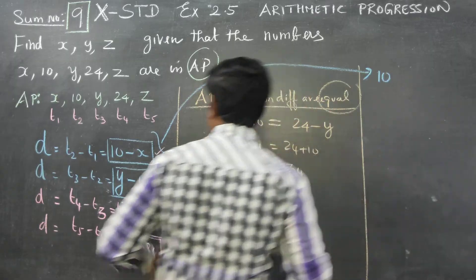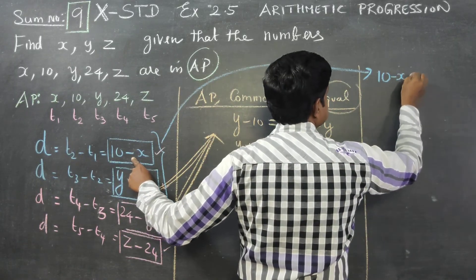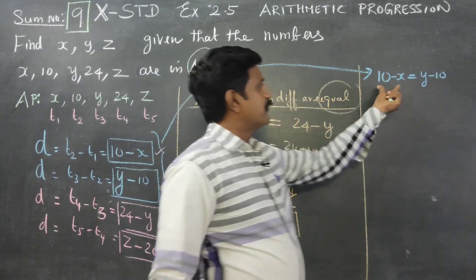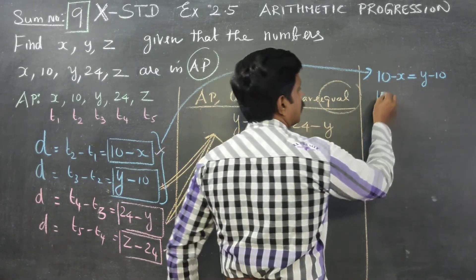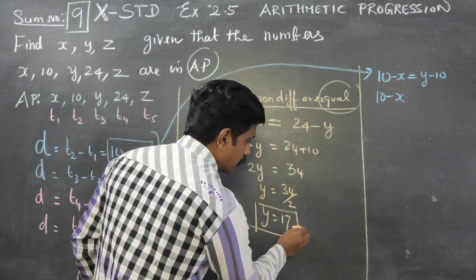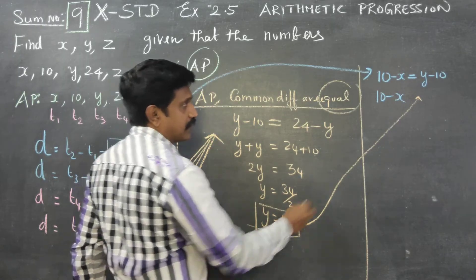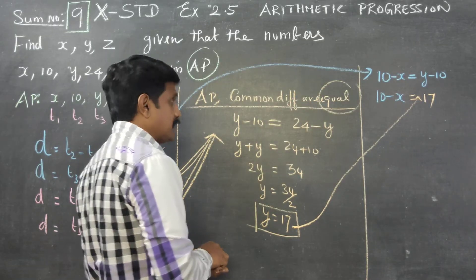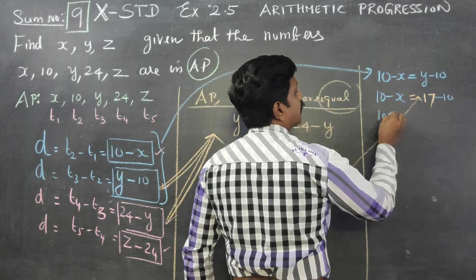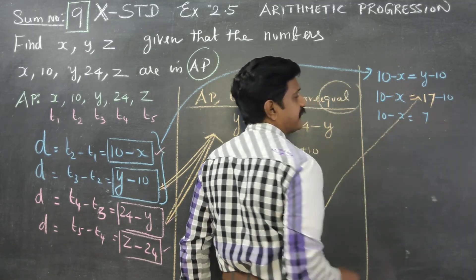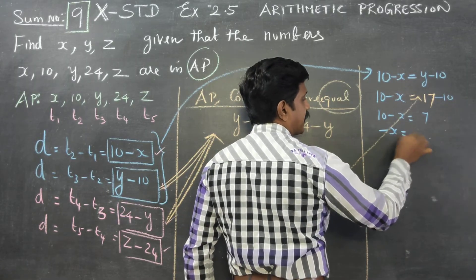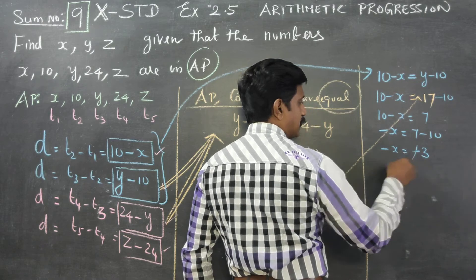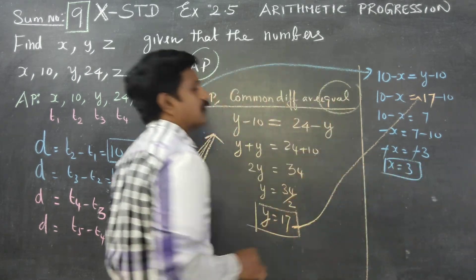Now using the 1st and 2nd common differences: 10 minus x is equal to y minus 10. Since y equals 17, y minus 10 equals 7. So 10 minus x equals 7, which gives x equals 3.